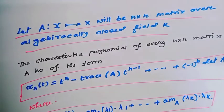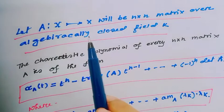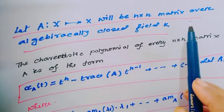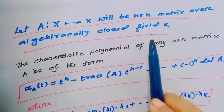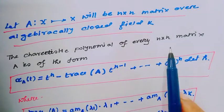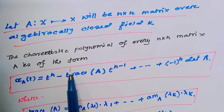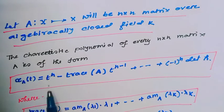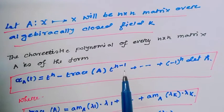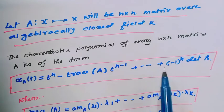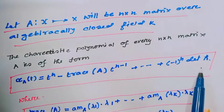Just recall from my earlier video: consider a linear map T from vector space X to X, which will be an n×n matrix over an algebraically closed field K. I had seen in my previous video what is the algebraically closed field. The characteristic polynomial of every n×n matrix A is of the form: χ(A) = t^n − trace(A)·t^(n−1) + ⋯ + (−1)^n · det(A).